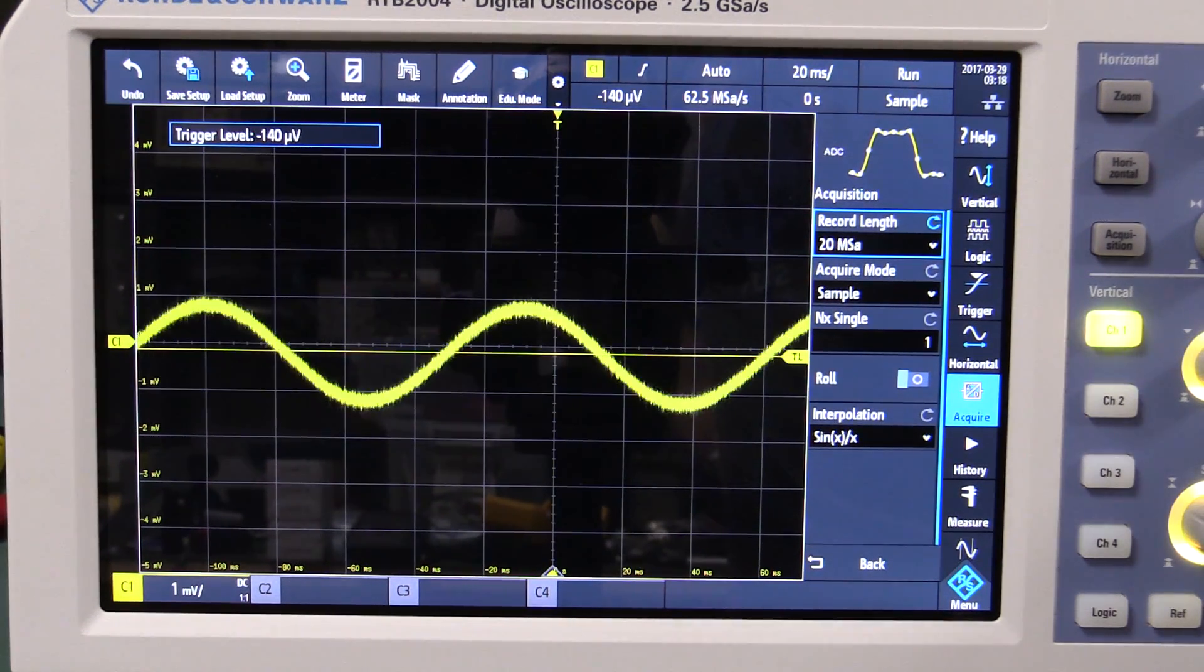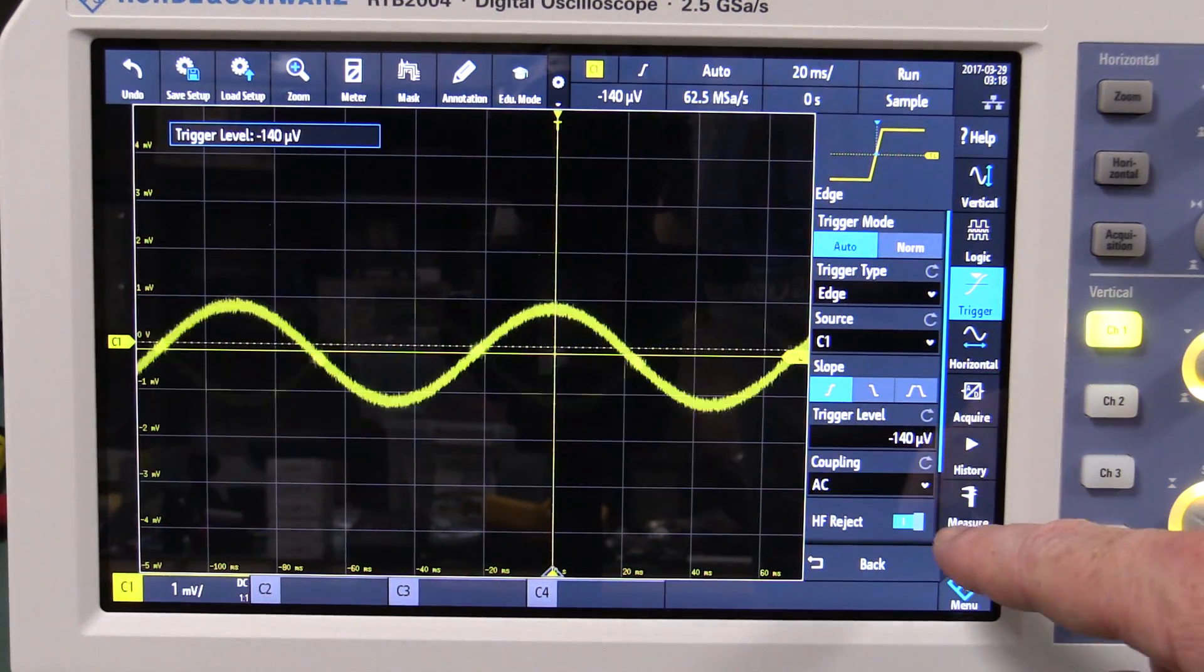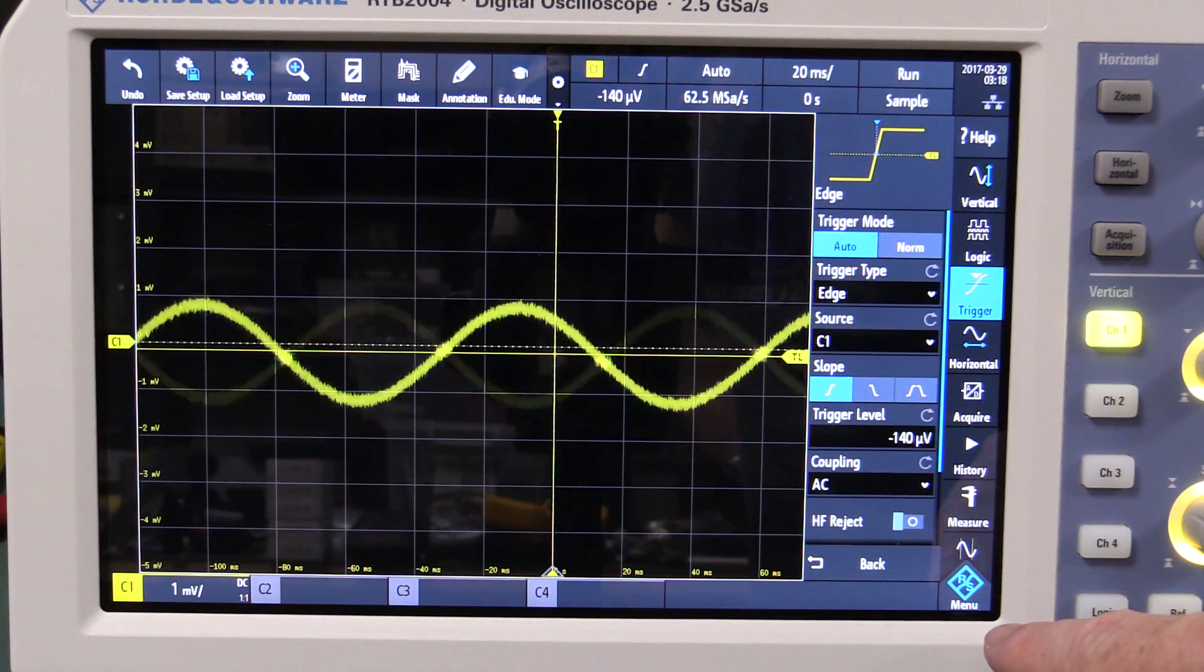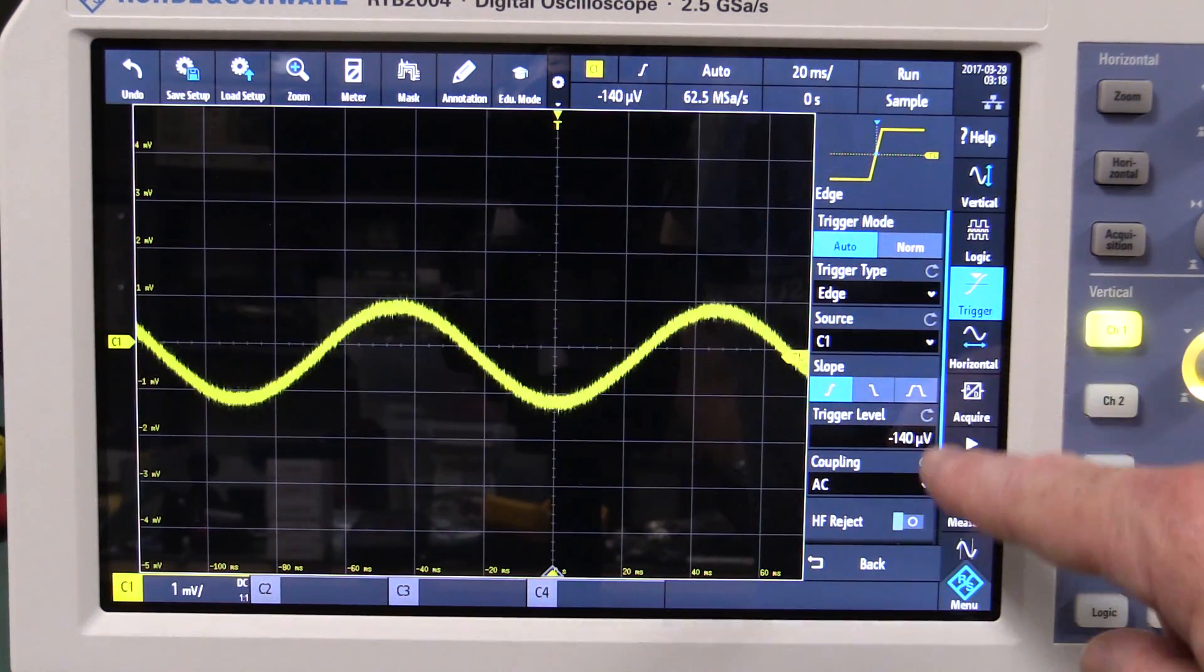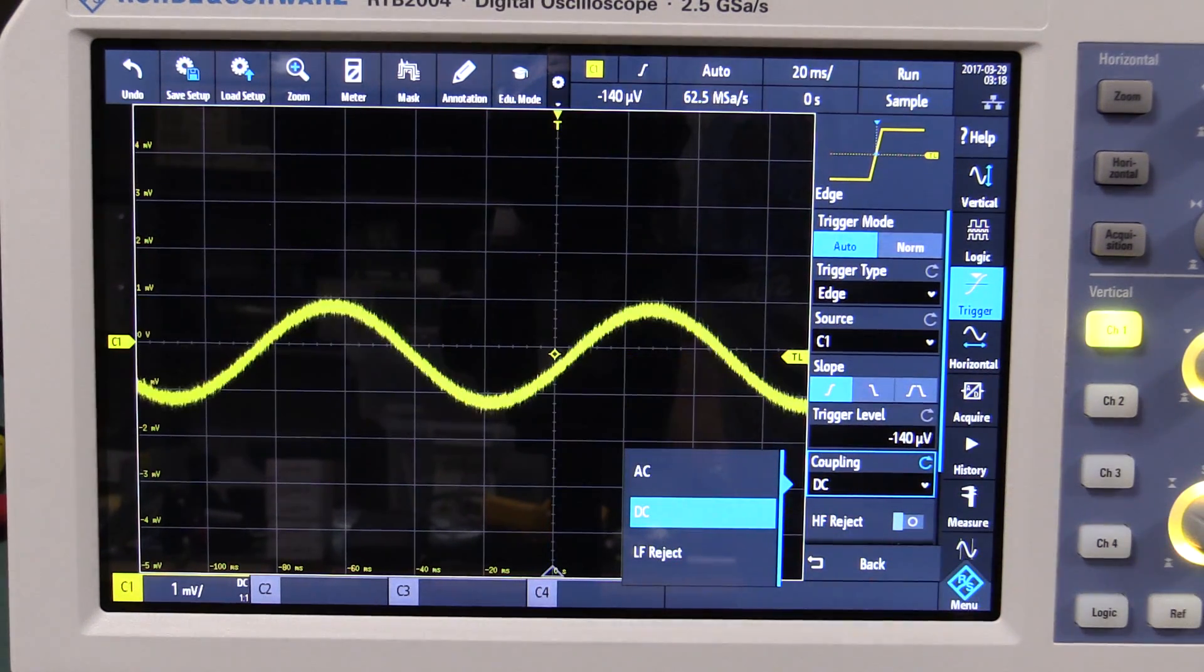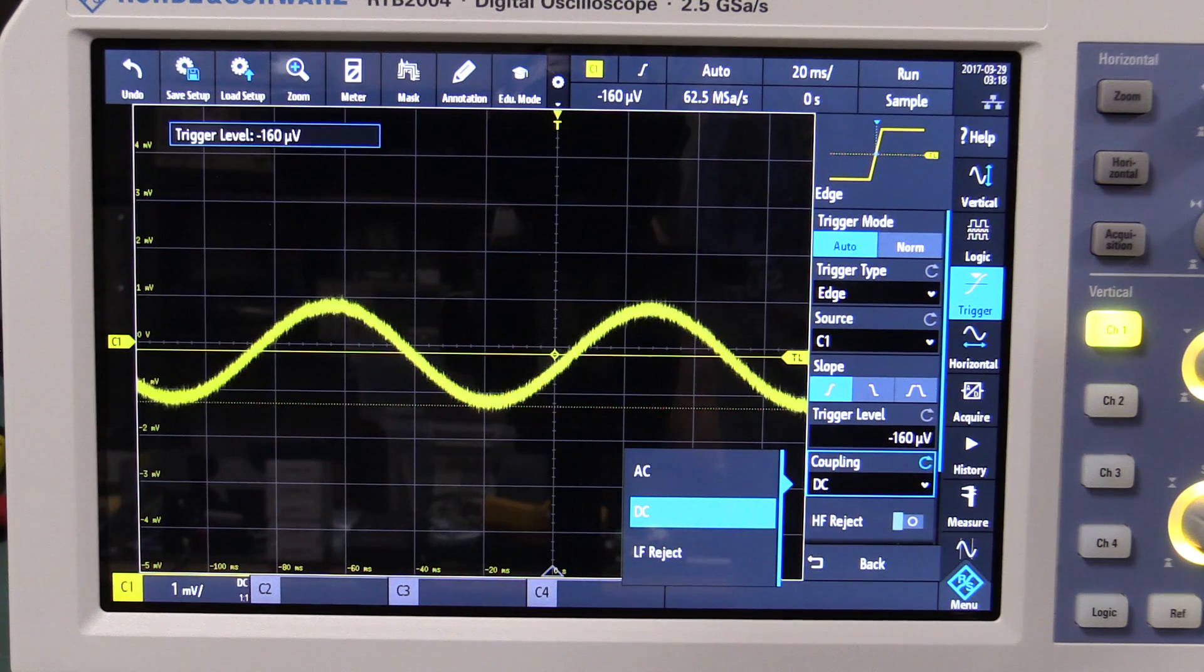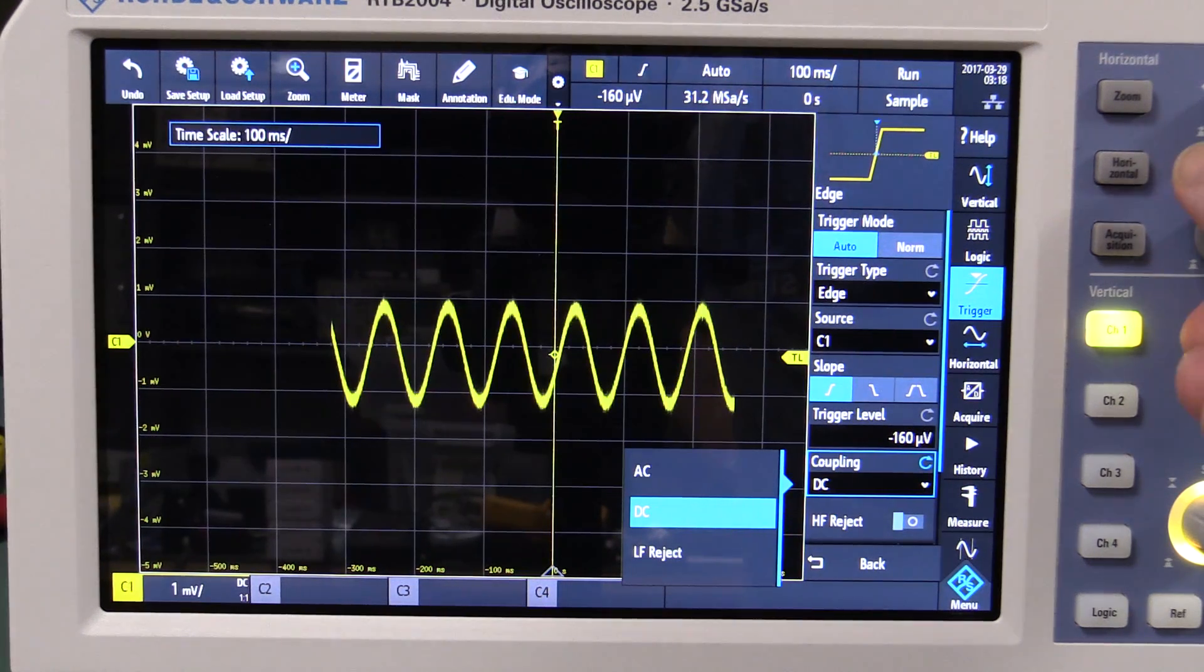So I'm not sure what the deal is there. I've got AC coupling, high frequency reject, trigger level, positive slope. I've got all the usual bells and whistles happening there so it should be doing that, but it's obviously not triggering. Oh there we go, it's triggering now. Maybe it doesn't like triggering at low frequencies.